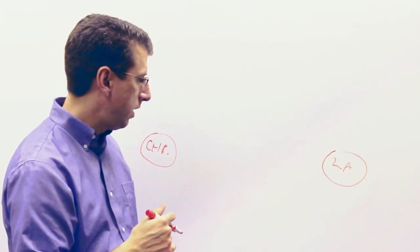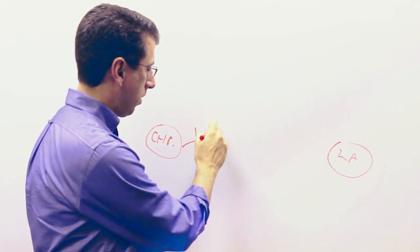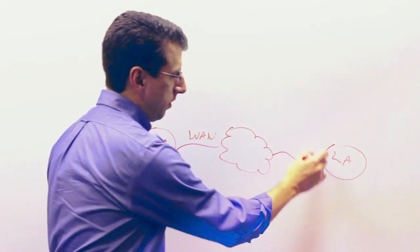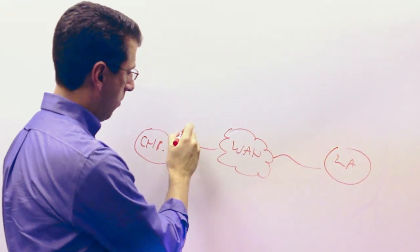One may be the headquarters, one might be a branch, and typically what happens is they're connected through a wide area network. It goes through some sort of, we'll call this the WAN, and the WAN connection is an IP connection into that WAN.